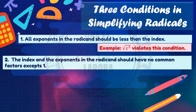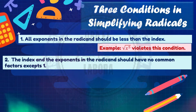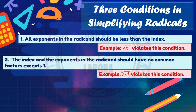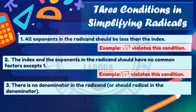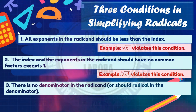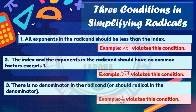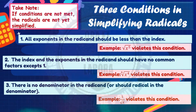Condition number two: the index and the exponent in the radical should have no common factors except one. Example: the sixth root of x raised to 4 — this violates the condition. Condition number three: there should be no denominator in the radical, or no radical in the denominator. For example, 1 over the square root of x — this also violates the condition. Take note: if the conditions are not met, the radicals are not yet simplified.